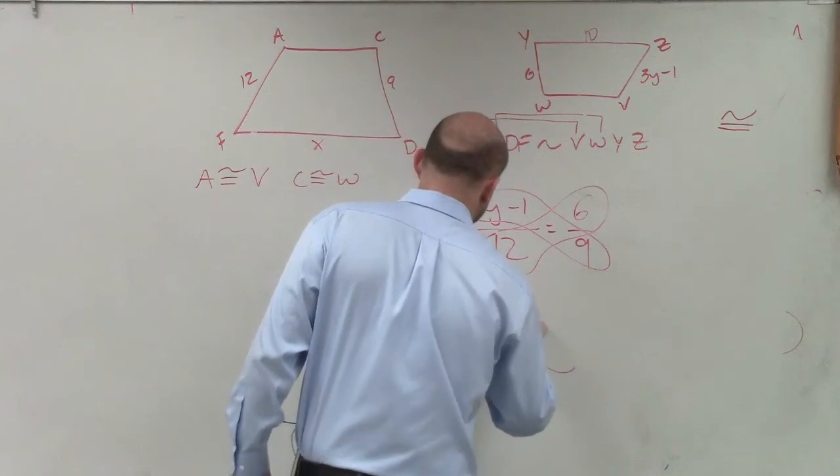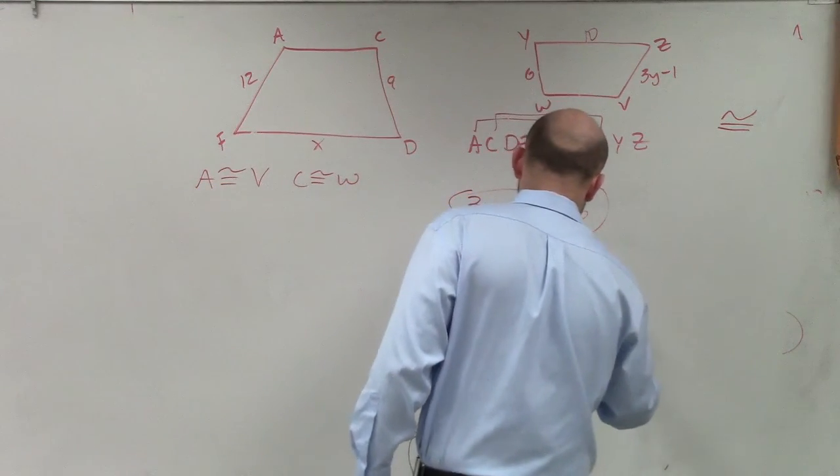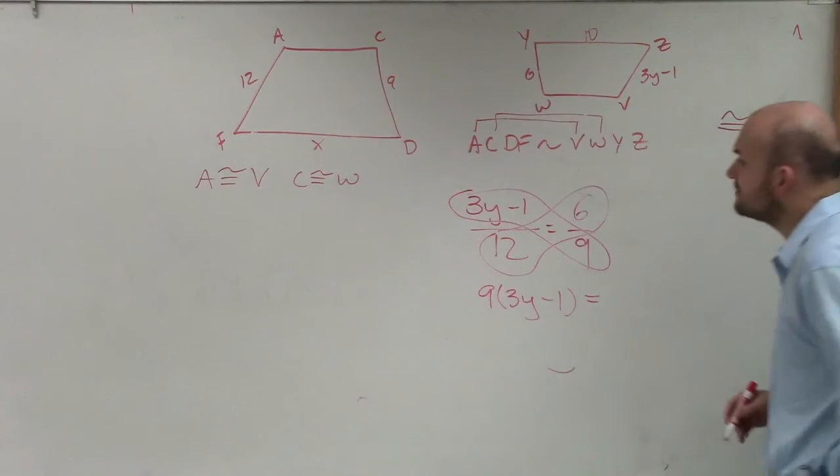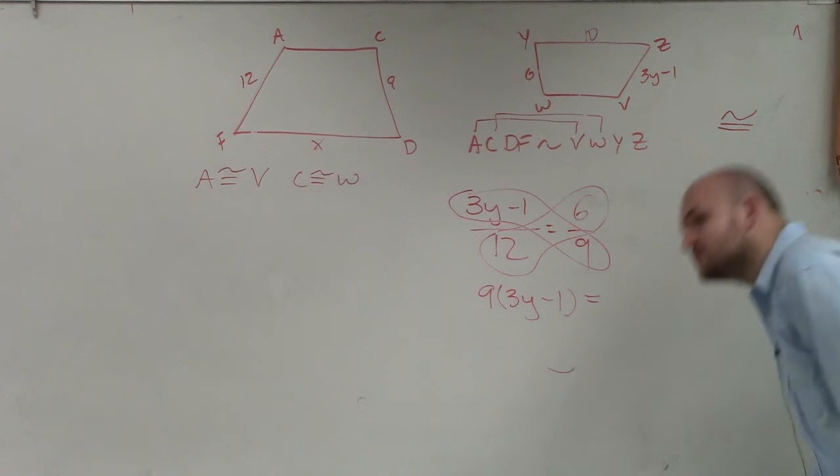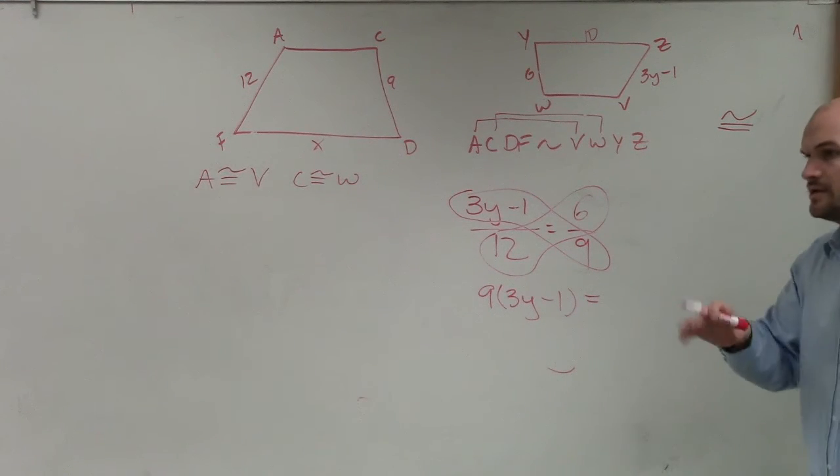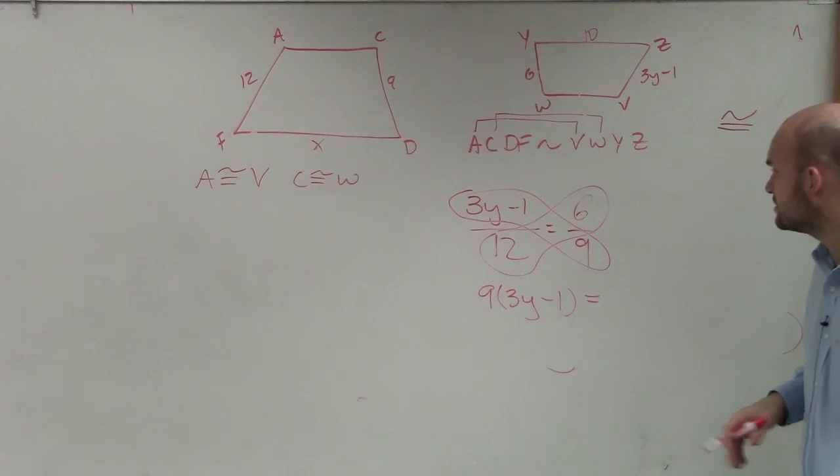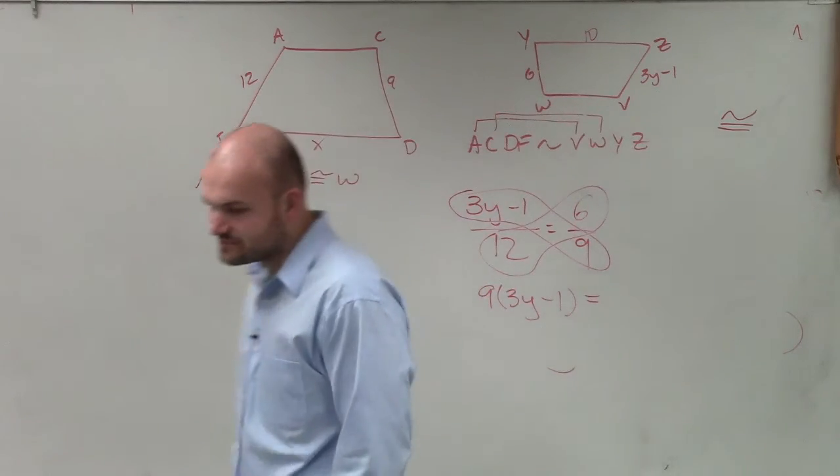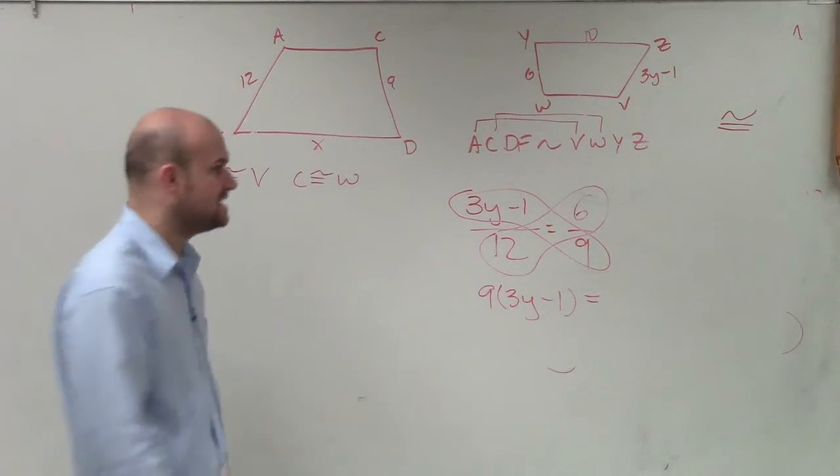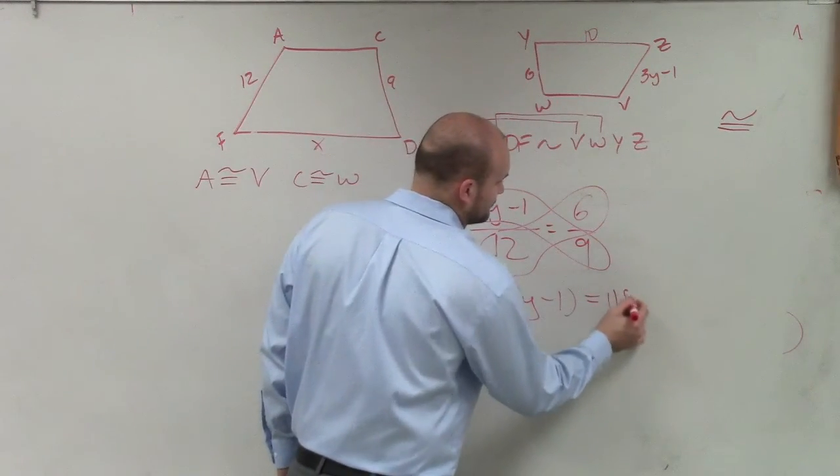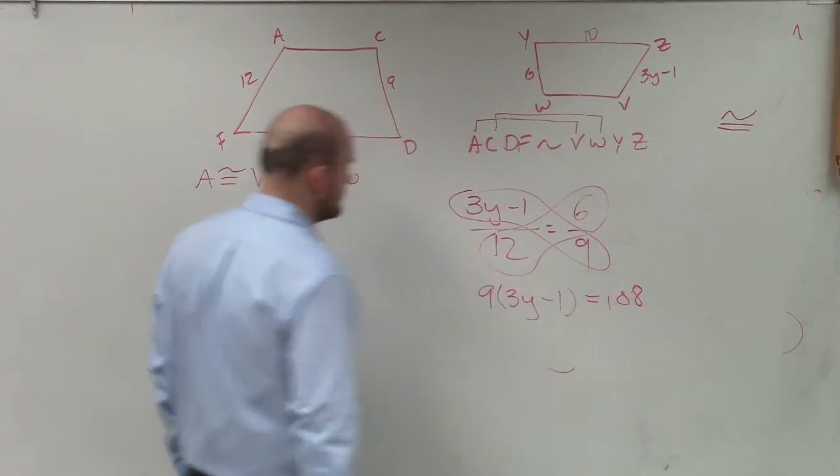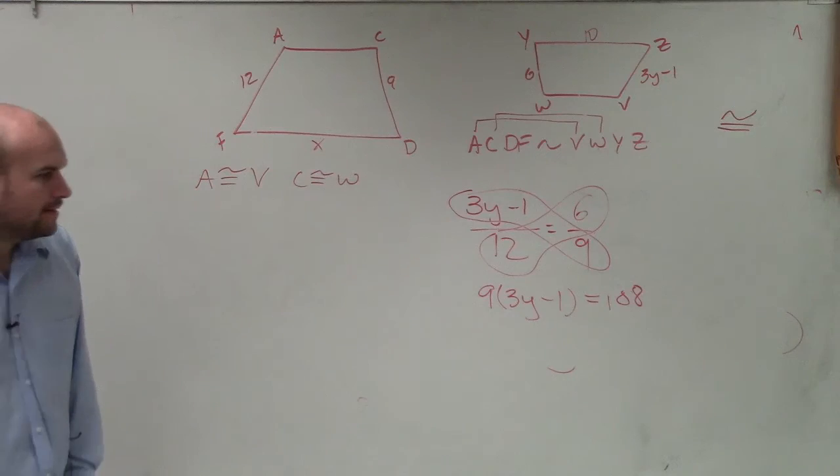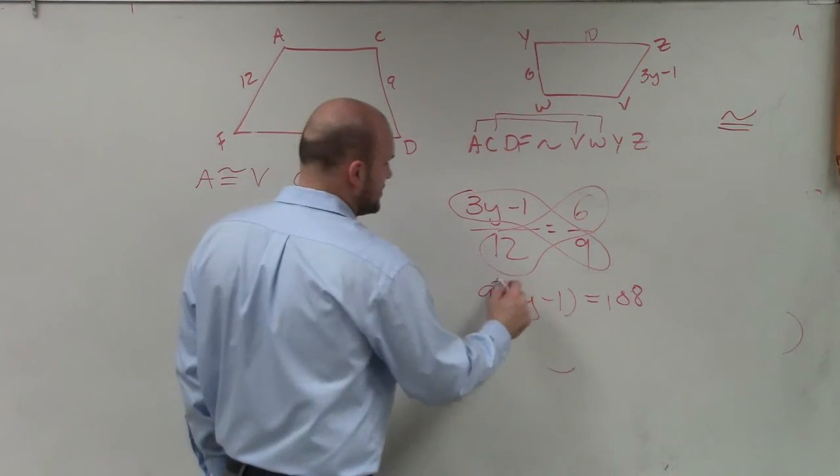So now I will apply my cross multiplication. So I have 9 times 3y minus 1 equals 9 times 12, which would be, Angel, could you put that face down on your desk, please? No, put it face down on your desk, please. Thank you very much. So 9 times 12, so 9 times 10 would be 118. No, 108. All right, so now I can apply distributive property.